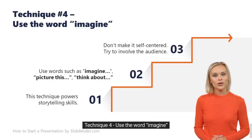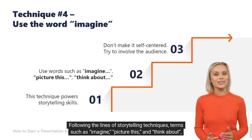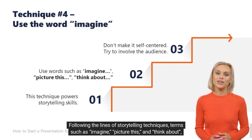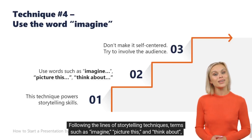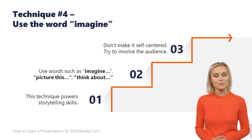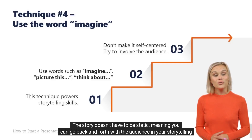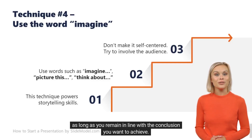Technique 4: Use the word 'Imagine.' Following the lines of storytelling techniques, terms such as 'imagine,' 'picture this,' and 'think about' are the best introduction lines to connect with the spectators. The story doesn't have to be static, meaning you can go back and forth with the audience in your storytelling as long as you remain in line with the conclusion you want to achieve.